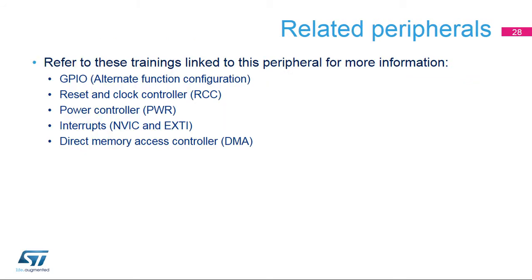This is a list of peripherals related to the USART. Please refer to these trainings for more information if needed: General Purpose Input/Outputs, Reset and Clock Controller, Power Controller, Interrupts Controller, and Direct Memory Access Controller.